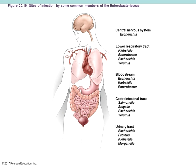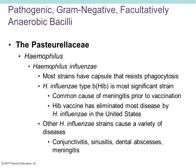Here is a summary of sites of infection by common members of the Enterobacteriaceae: the central nervous system can be affected by Escherichia coli; lower respiratory tract by Klebsiella, Enterobacter, and E. coli; bloodstream causing bacteremia from E. coli, Klebsiella, and Enterobacter; the gastrointestinal tract by Shigella, Salmonella, E. coli, and Yersinia; and urinary tract infections by Proteus, Klebsiella, Morganella, and Escherichia.